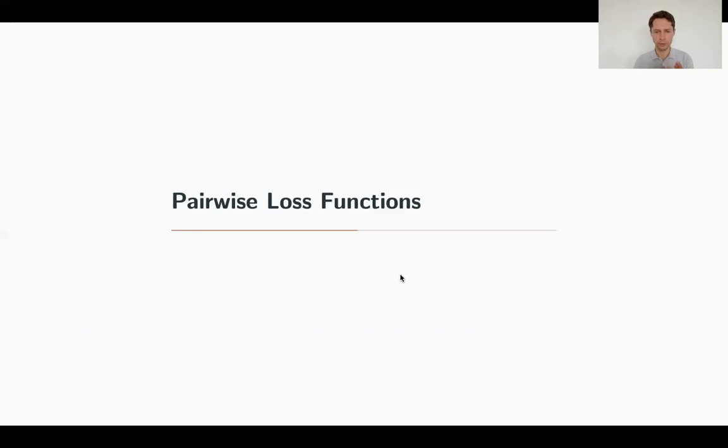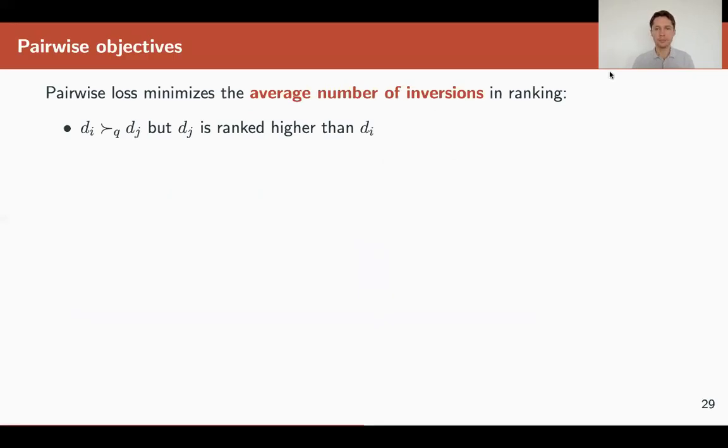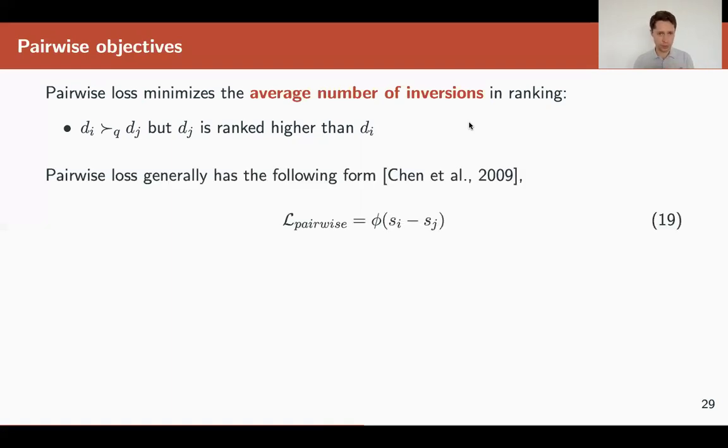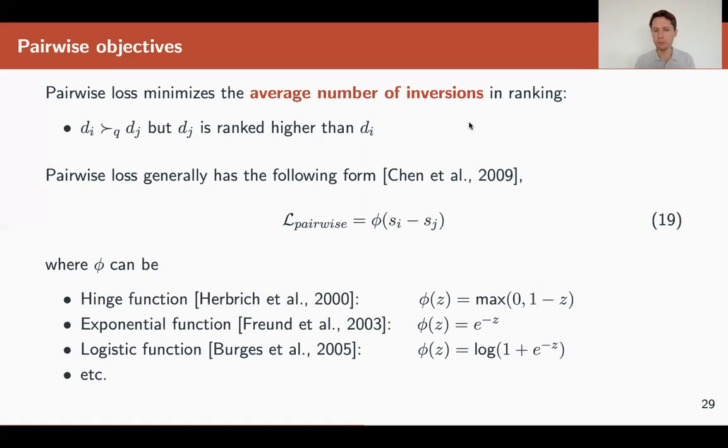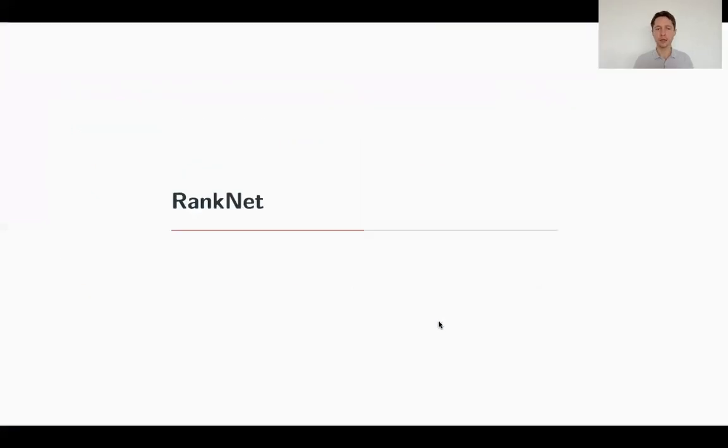We want to minimize the average number of inversions in a rank. If our model f created a certain ranking, we'd like the number of correct pairs to be the largest. These losses can be different types of functions, for example hinge function, exponential function, logistic function, and so on. Let's take a look at one implementation of pairwise approaches called RankNet, a very popular approach still used in industry a lot.